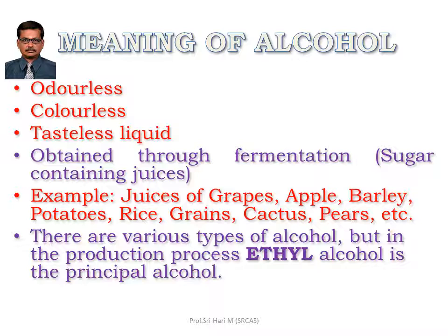There are various types of alcohol. Here we are going to see only ethyl alcohol. Even though during the production process we get two types of alcohol — one is methyl and another is ethyl, also called methanol or ethanol — ethyl alcohol is the principal alcohol. Methyl is poisonous and ethyl is the potable, drinkable alcohol.